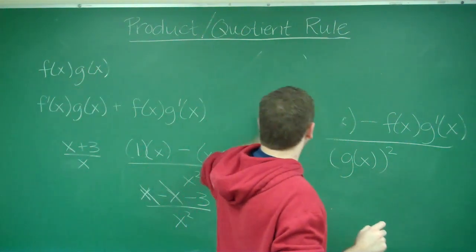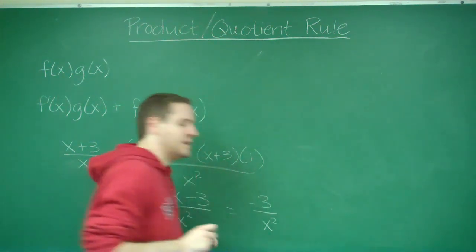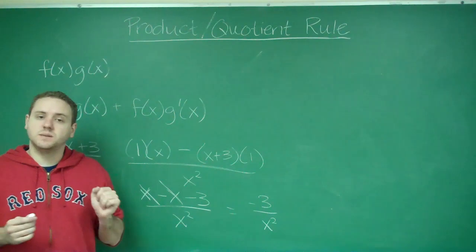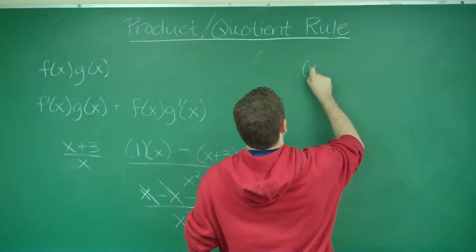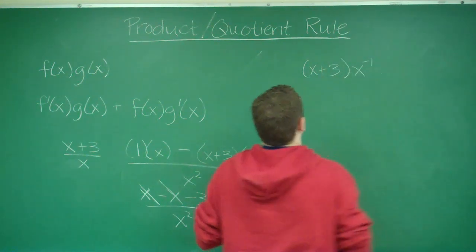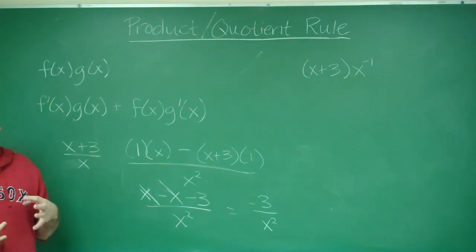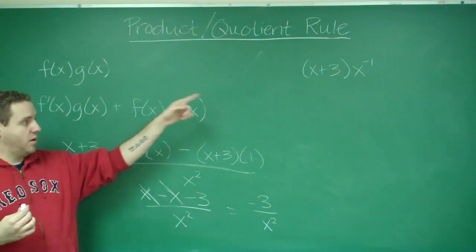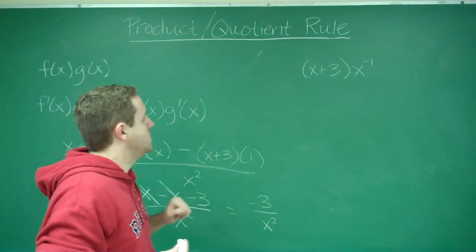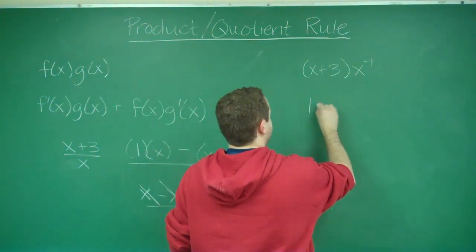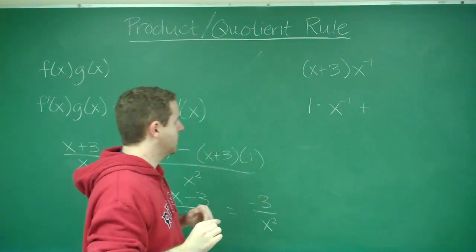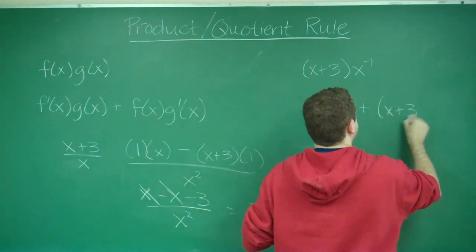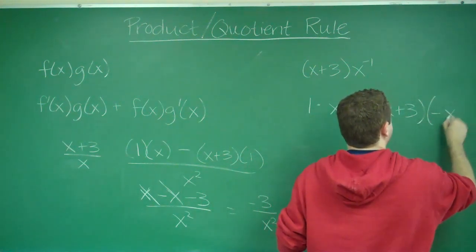That was using the quotient rule. Now I want to show you can get the exact same result using the product rule. To use the product rule, the function needs to be written as a product, so rewrite (x + 3)/x as (x + 3) times x to the negative 1 — remember, something on the bottom of a fraction is the same as a negative exponent. Applying the product rule: we get 1 times x to the negative 1, plus (x + 3) times the derivative of x to the negative 1, which by the power rule is negative x to the negative 2.